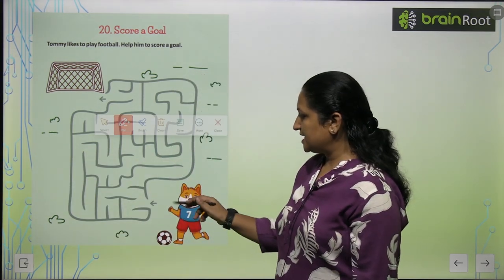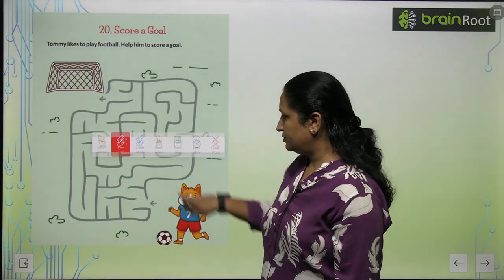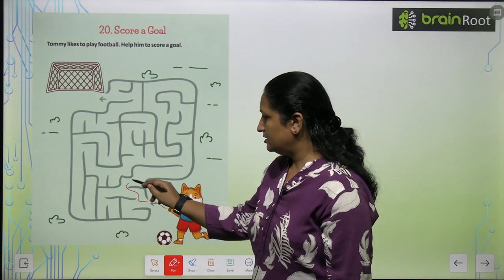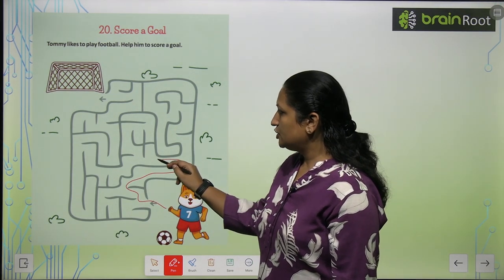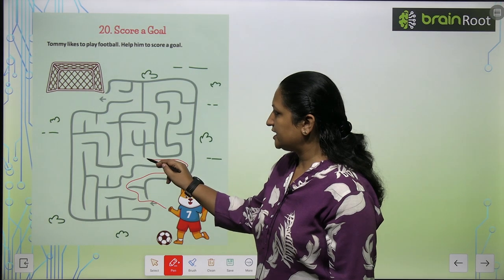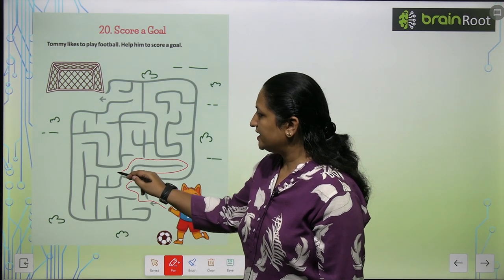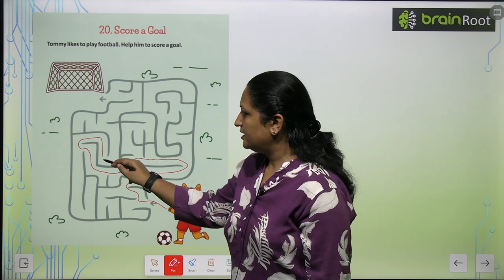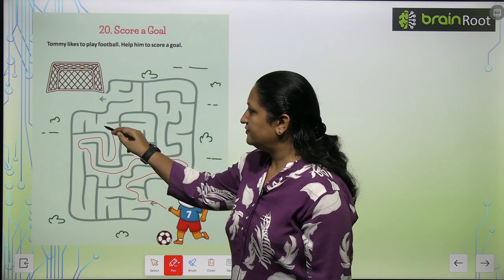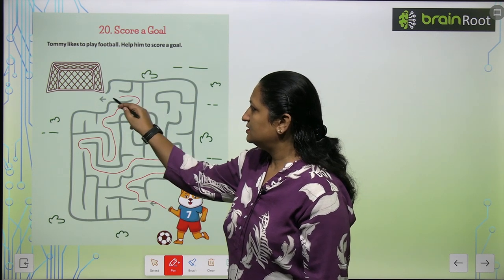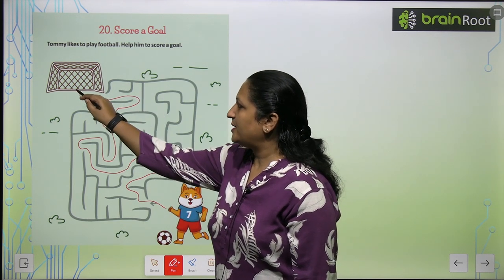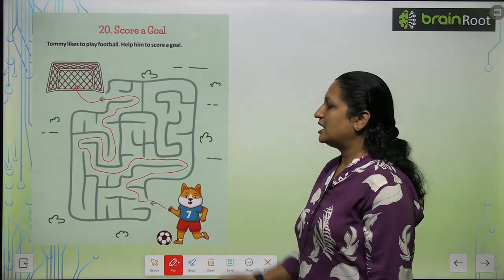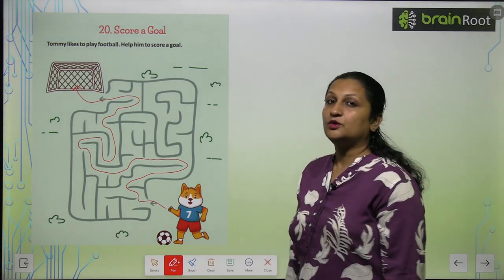We will start from here. We have to go from here, not from there. Then you go like this — from here, and then we reach the stop, and it's a goal! So you will trace the path to reach the goal.